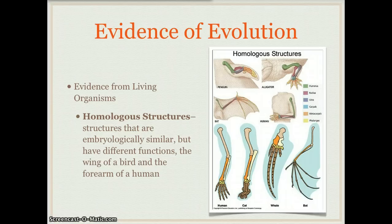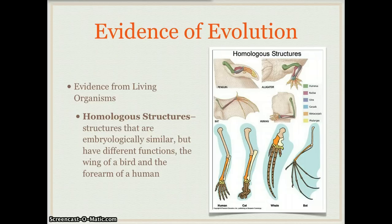Another piece of evidence of evolution is called homologous structures. These are structures that are embryologically similar but have very different functions. In the picture you can see one example: there are very similar bones in a human arm, a cat leg, a whale fin, a bat wing, a penguin wing, and an alligator foot. They have very similar looks to them but very different functions. This shows that there may have been a common ancestor that also had a similar bone structure.